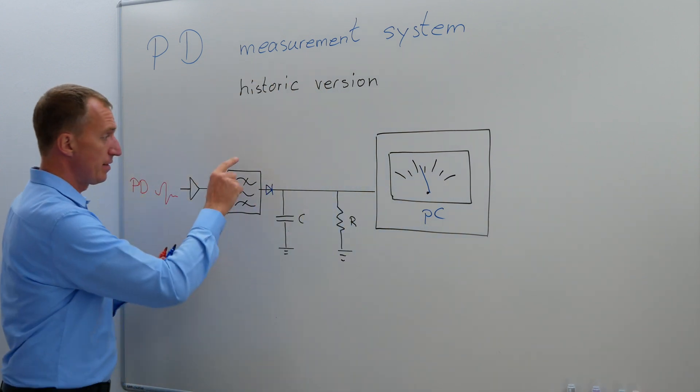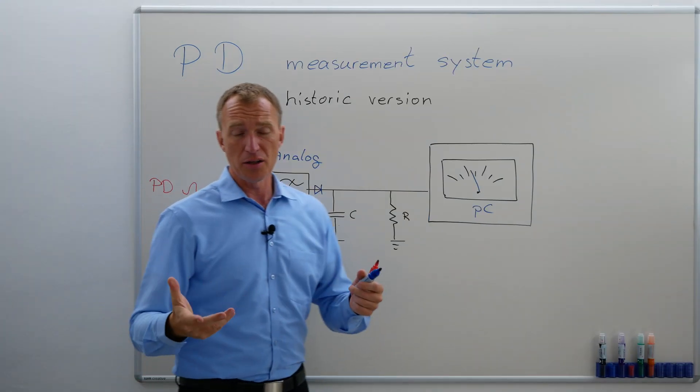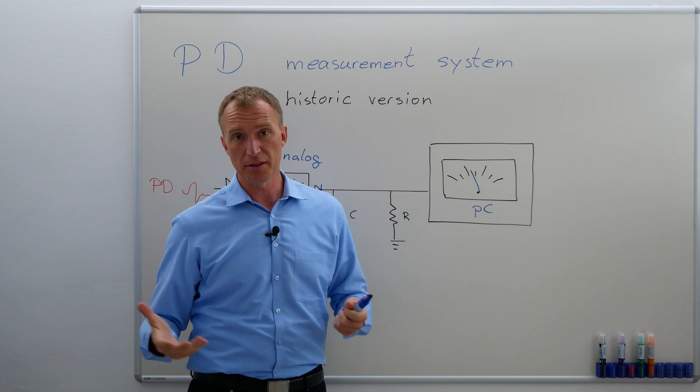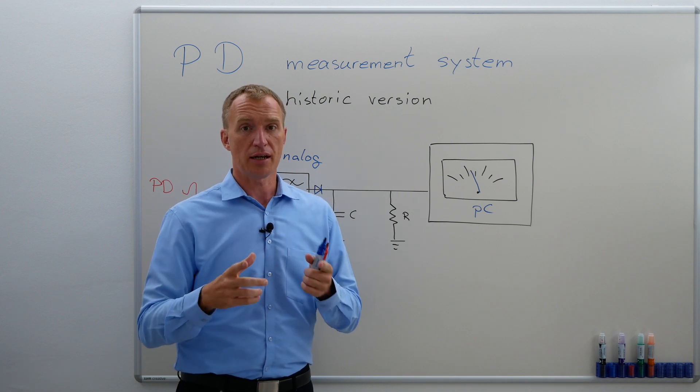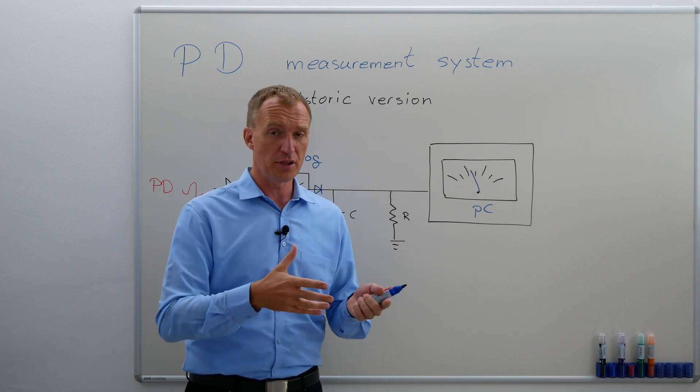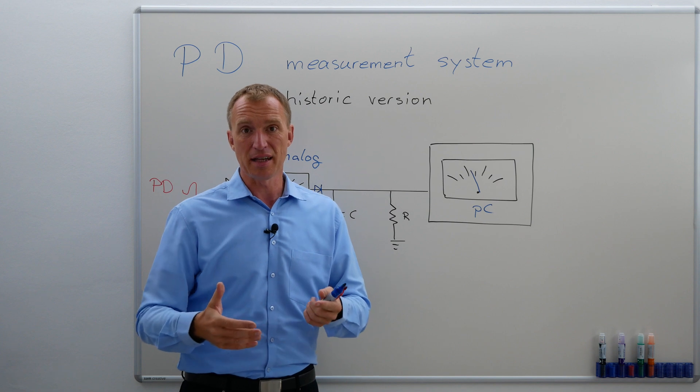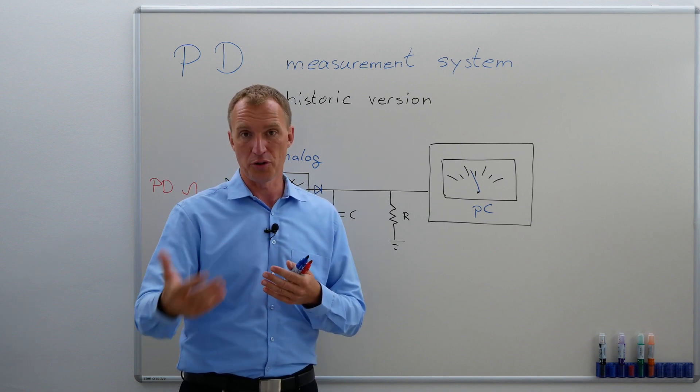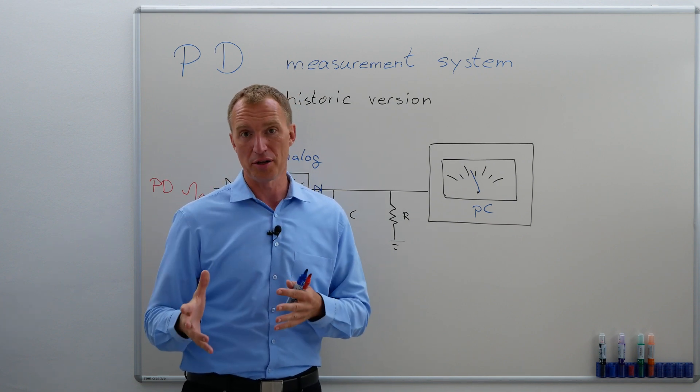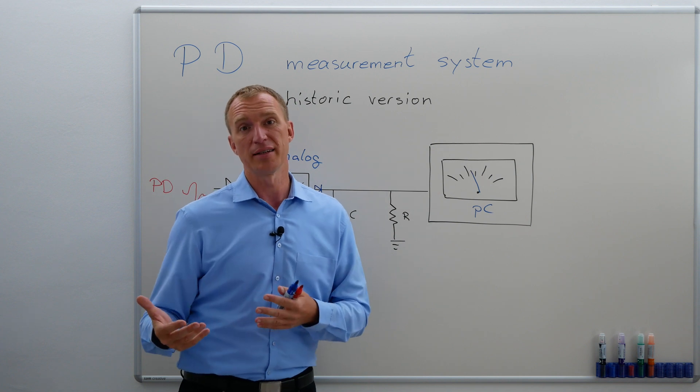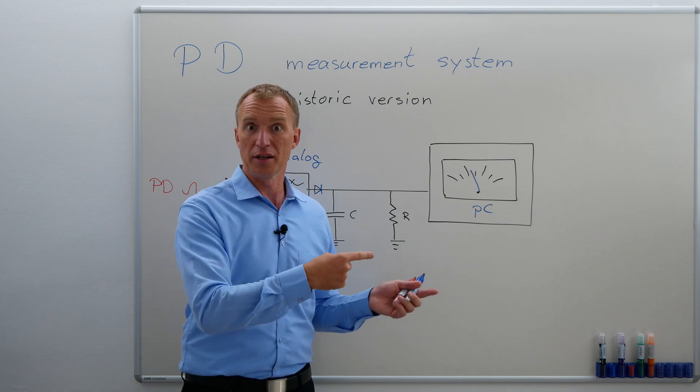However, the worst part was that this was an analog filter system and analog filter systems have the disadvantage that capacitors in there, resistors and other things, the problem was that they would change their characteristic, they would change their behavior over temperature and over time. And because they changed their behavior over temperature, it literally states in the standard that you should have your system running for a while in order to warm it up, or at least in the older versions. And it also states in the older versions, do not repeat a partial discharge measurement because very likely you would get something else. Fortunately, we moved away from that and we will move to digital versions.